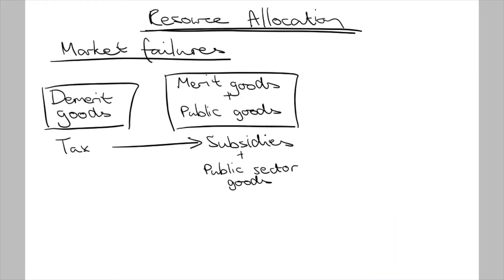Another way the government could allocate more resources to an underproduced industry is through providing the good themselves, also known as public sector goods. This is often the method for providing public goods — goods the private sector is unwilling to provide because there is no profit to be made, as they are non-excludable and non-rival. An example is the military: if it weren't for the public sector, there would be no resources allocated to the military.